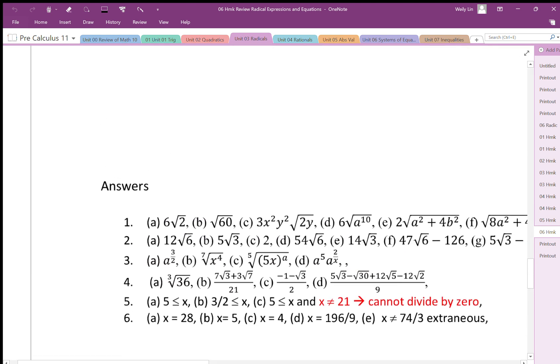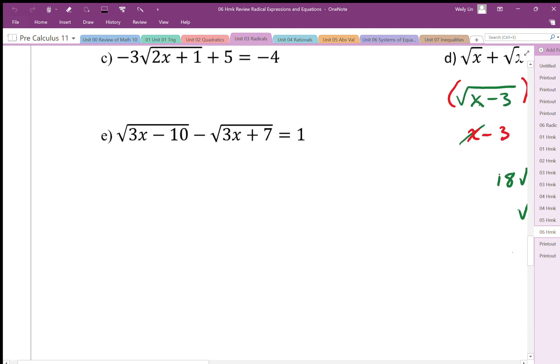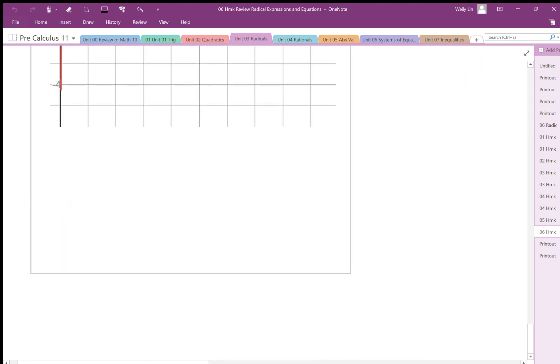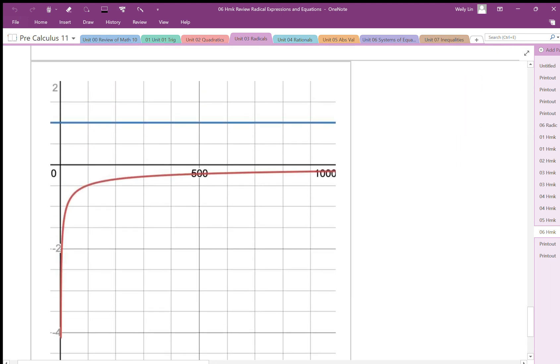As x gets really, really big, it actually ends up being basically square root 3x minus square root 3x, because that minus 10 and plus 7 is really not very significant for really big values of x. And so the left side tends towards zero, and the right side just stays one. So we can see that there is no real solution for this.